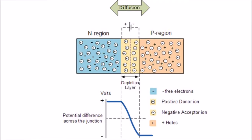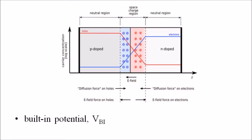In a PN junction, without an externally applied voltage, an equilibrium condition is reached in which a potential difference is formed across the junction. This potential difference is called the built-in potential and it is represented as VBI.